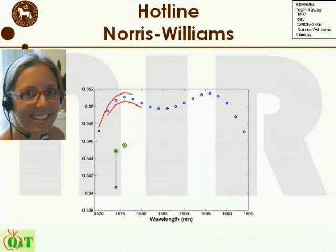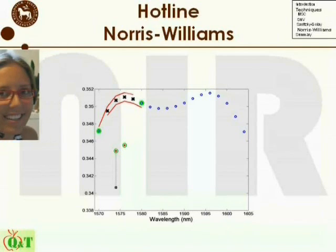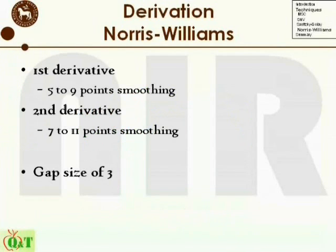These two points, however, are calculated as the average of five points, two points on each side. The estimate of the derivative will therefore simply be the difference between two points five measurement points apart, divided by five. This means that the only effect the smoothing step has had is scaling down the estimate of the derivative in comparison to using the raw spectrum. If the gap size is larger than one, the smoothing will have an effect.